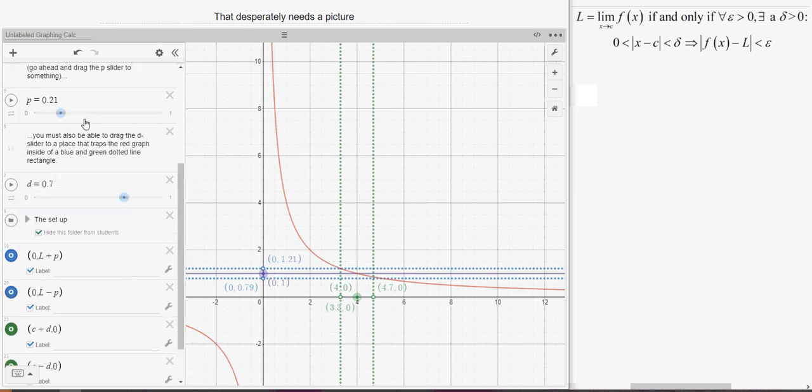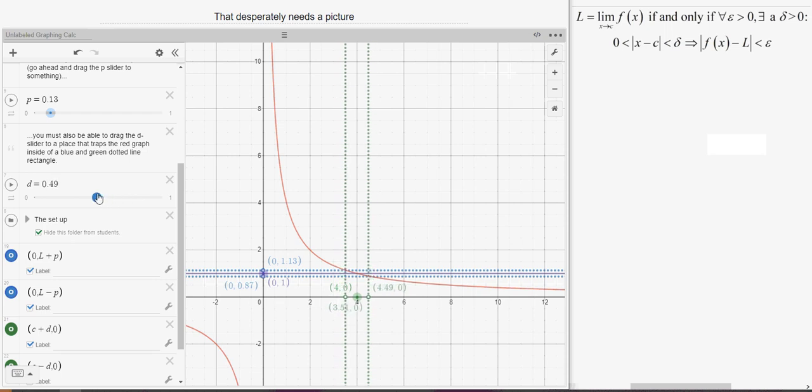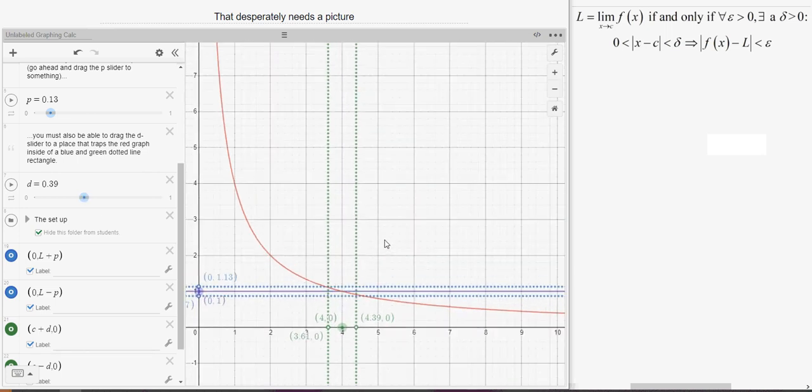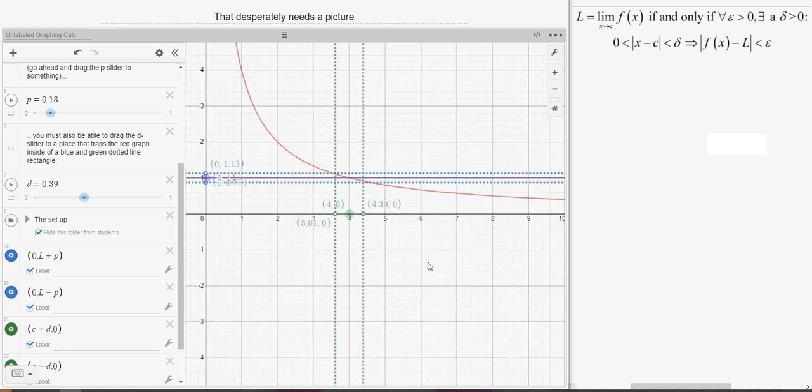And if somebody tries to squeeze that epsilon down a little bit tighter, I can correspondingly squeeze the delta down tighter. Now this is just approximating values here, but I should be able to zoom in on what's going on here.